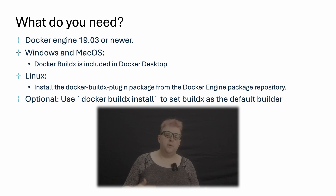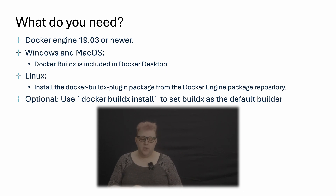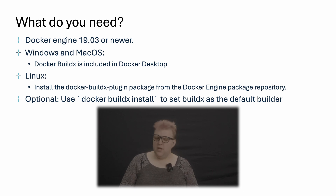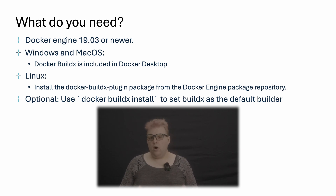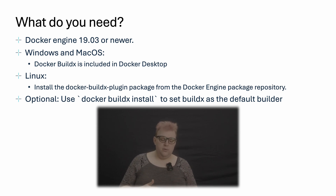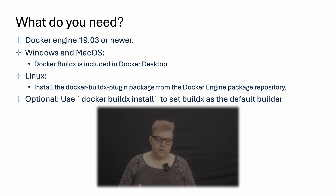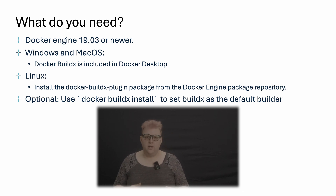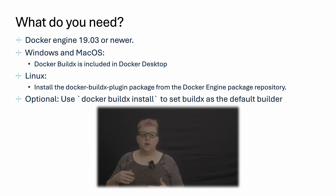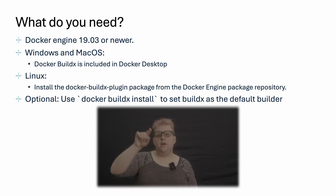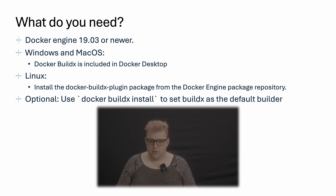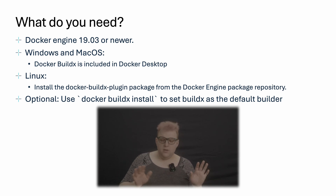So let's talk about what you need to follow along with this tutorial. First off, you need to be running Docker Engine 19.03 or newer. If you have Docker Desktop for Windows or macOS, Docker BuildX already comes pre-installed — no extra configuration is necessary. If you have Linux, you do need to install a Docker BuildX plugin package from the package repository. Once you do so, you'll have Docker BuildX access on your CLI. You can also use the command Docker BuildX install to set Docker BuildX as the default builder, making Docker BuildX build equivalent to just Docker Build.